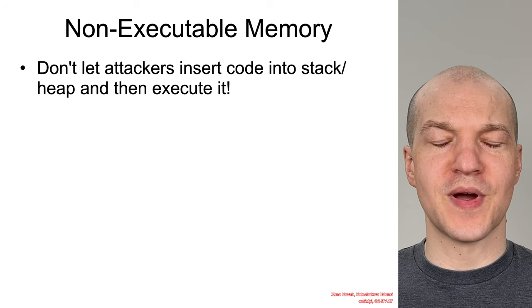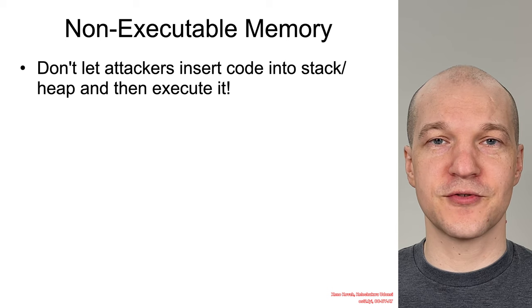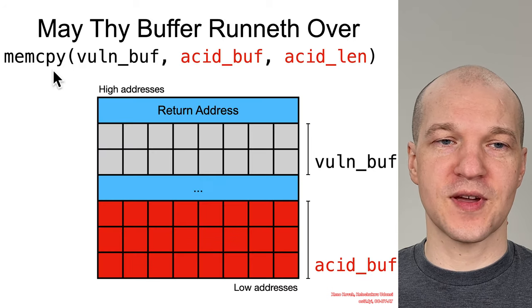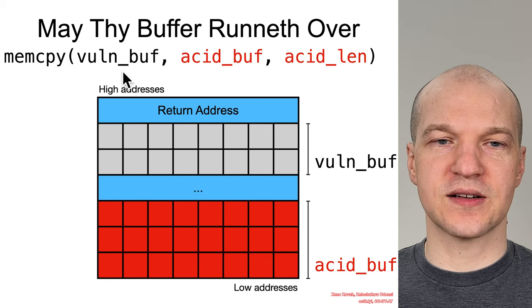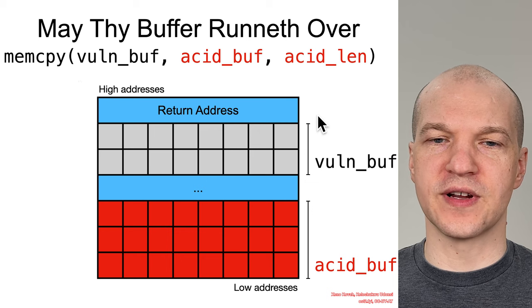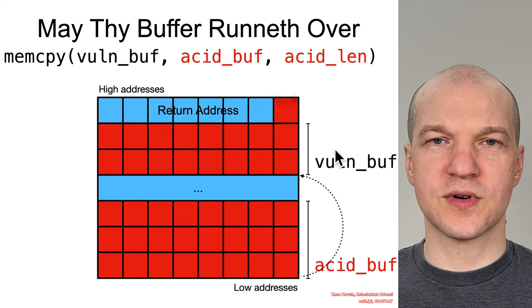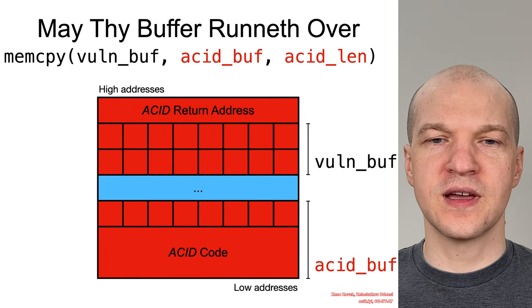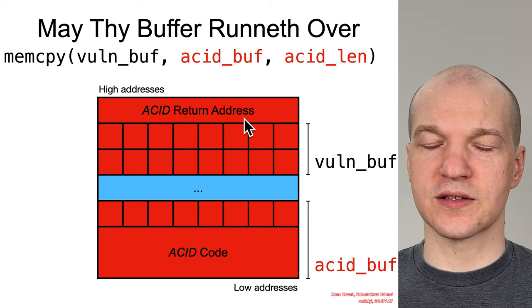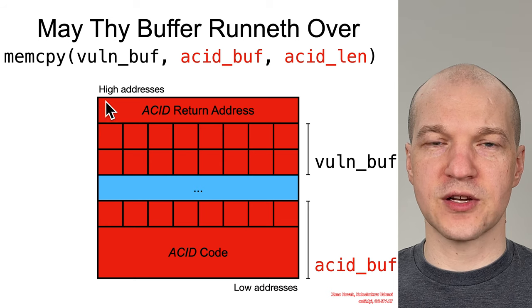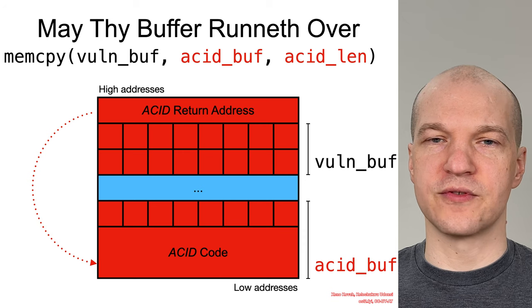The goal of the non-executable memory exploit mitigation is to not let attackers just write code into memory and then execute it. In our buffer overflow example, mem copying attacker-controlled data into a vulnerable buffer and overflowing — one of the canonical historical methods was that the return address would jump somewhere into attacker-controlled code, the shellcode. What they would do is return into code that was found in the buffer itself.